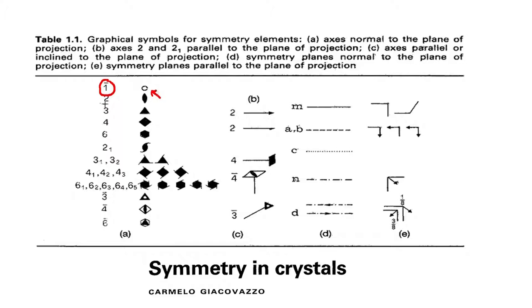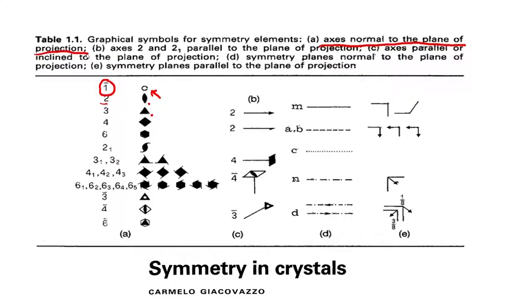These are the symbols universally used in literature, which will be used in crystallography throughout the course. For the two-fold, we have one representation; for the three-fold, we represent it another way. This is as long as the axes are normal to the plane of the projection. We are looking down into this screen, and these are the representations of the rotation symmetries. If there is no symmetry — one-fold, i.e., 360-degree rotation — there is no representation needed, as the object simply maps onto itself.